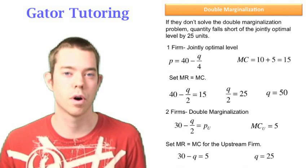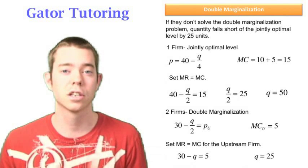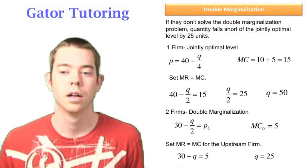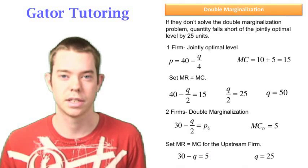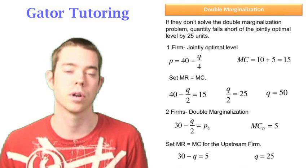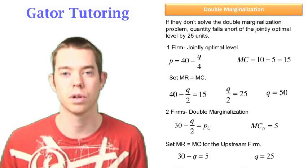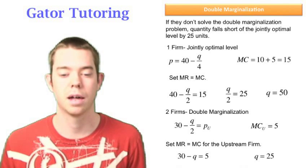Now, real fast, I found the quantity from the upstream firm in the second part. That's going to be the same quantity that the downstream firm is selling, right? Because if they're demanding 25 engines, they must be selling 25 cars. So just keep that in mind.